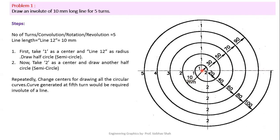Now denote the lengths. The first radius is 10 mm because we drew the initial radius of 10 mm from center 1. The second radius is 20, the third is 30, the fourth is 40, the fifth is 50, then 60, 70, 80, 90, and finally 100.